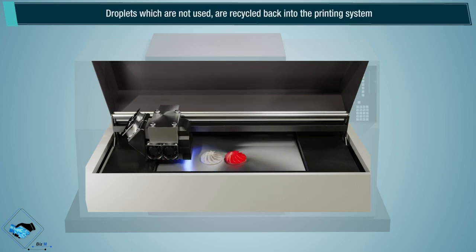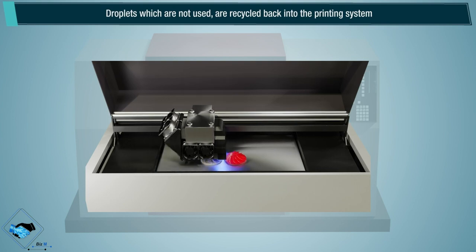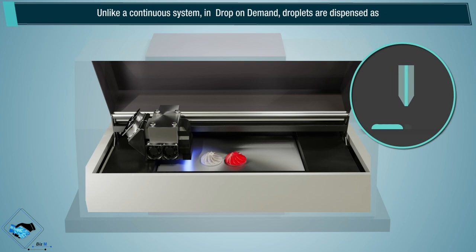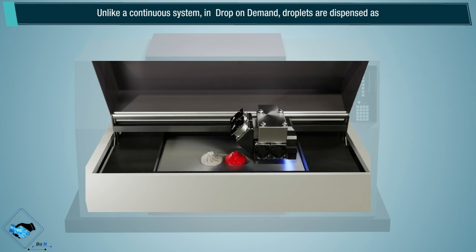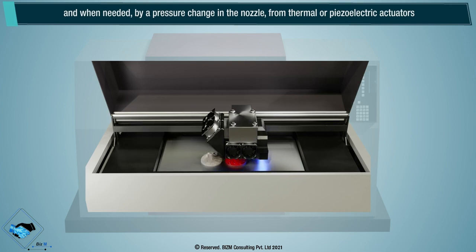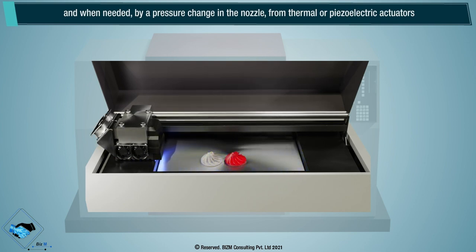Droplets which are not used are recycled back into the printing system. Unlike a continuous system, in a drop-on-demand, droplets are dispensed as and when needed by a pressure change in the nozzle from thermal or piezoelectric actuators.